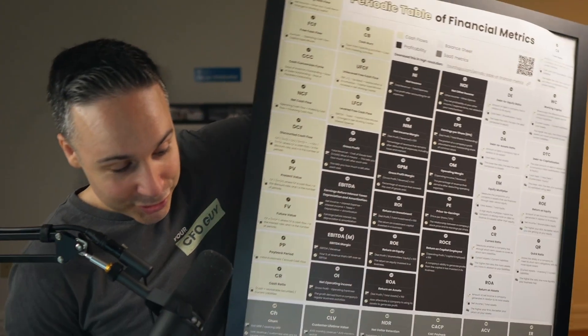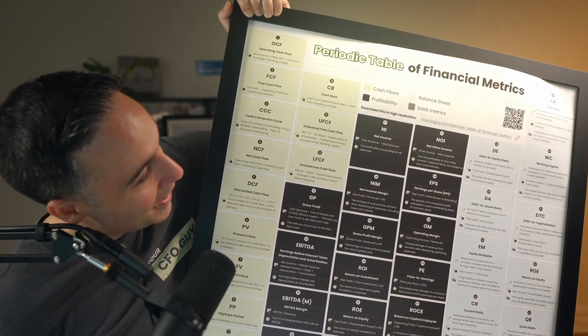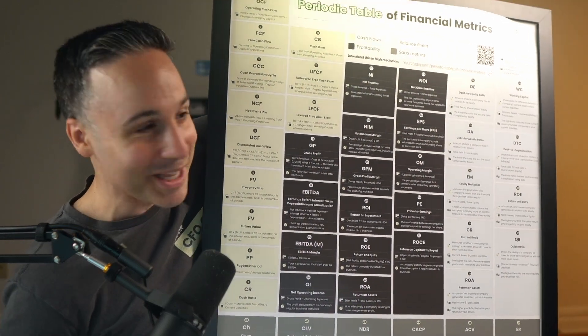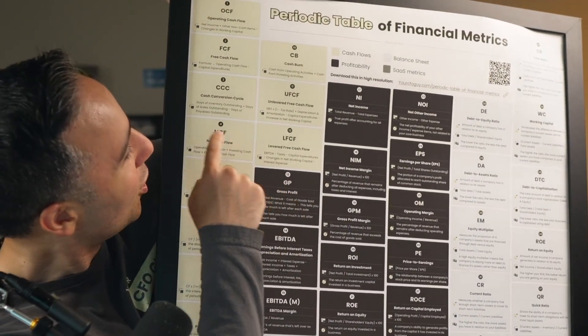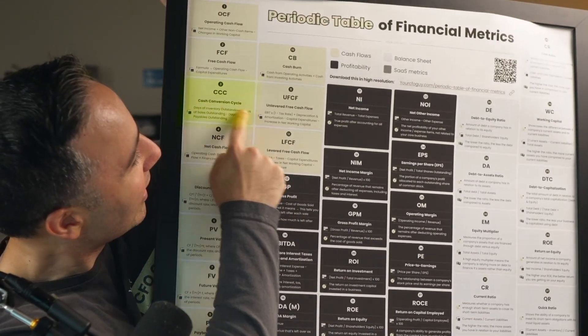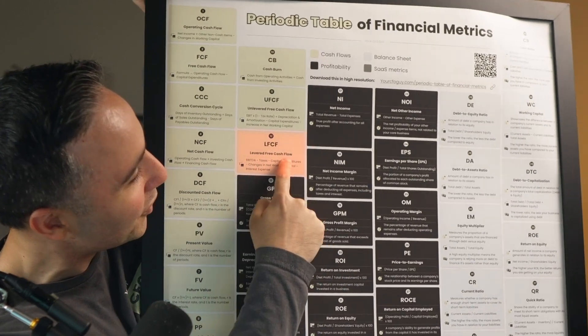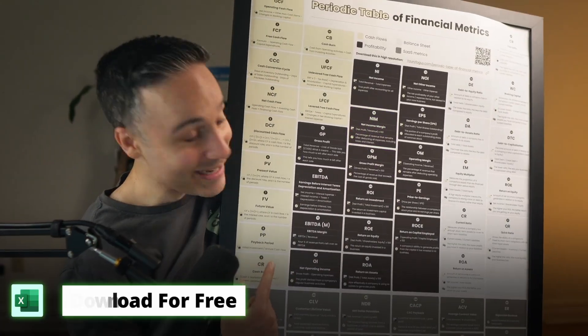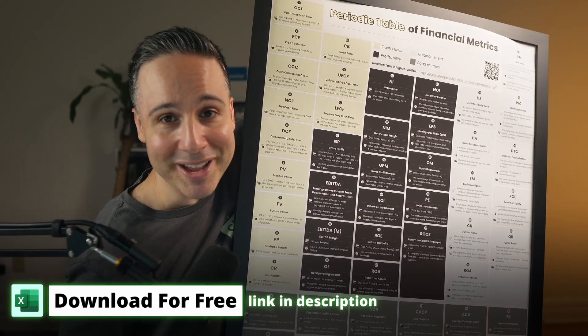If you're looking for a quick cheat sheet on a bunch of helpful metrics, you can download my periodic table of financial metrics. This is one of my favorite infographics we ever created — it covers things like cash conversion cycle, levered free cash flows, net income margin, and much more. You can go ahead and download that from the description whenever you're ready.